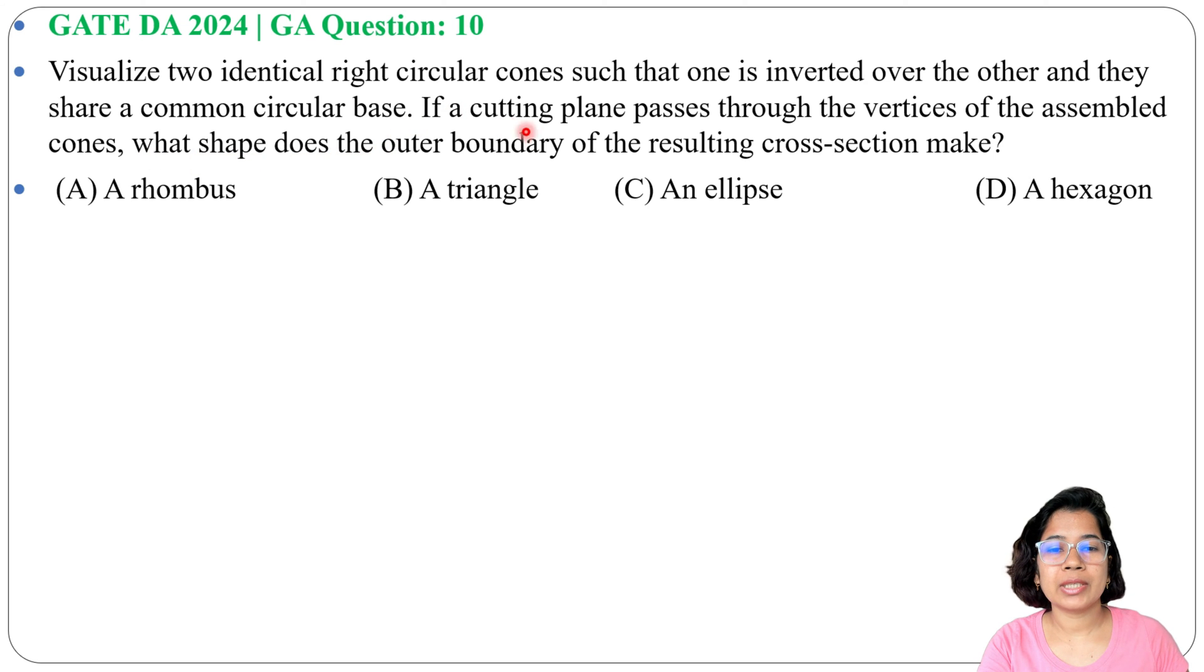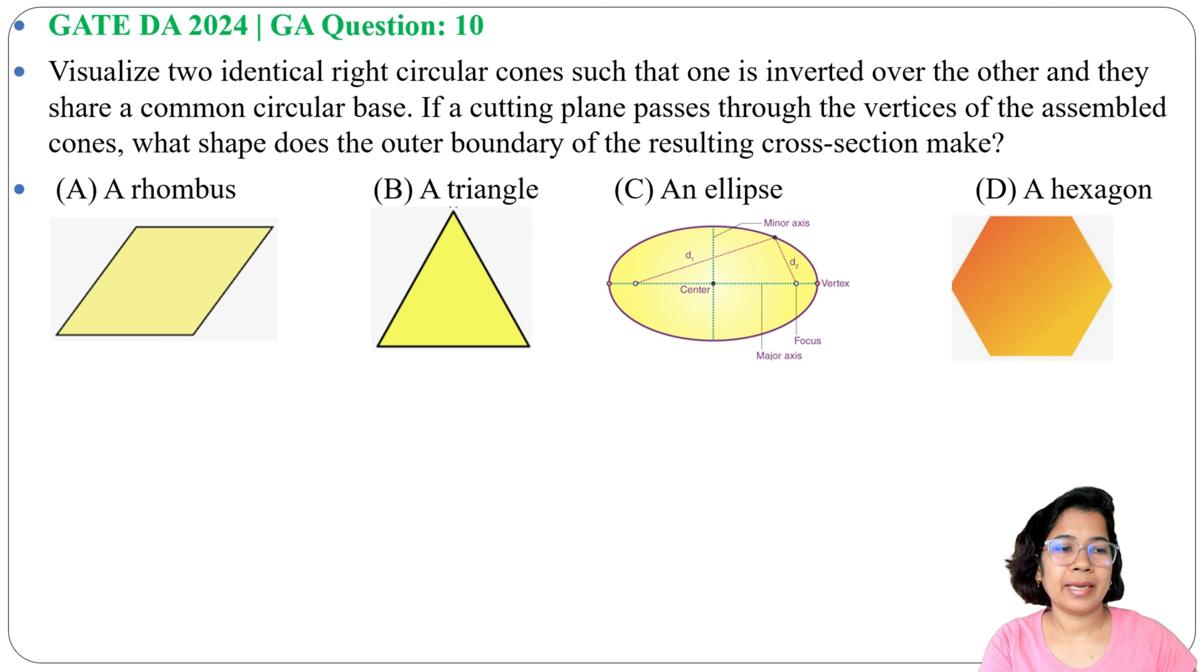what shape does the outer boundary of the resulting cross-section make? Four options are given. First, understand these options. Option A: a rhombus - it has four corners and is inverted, not like a rectangle. Triangle has three corners. An ellipse. And a hexagon has six corners. These are the options.